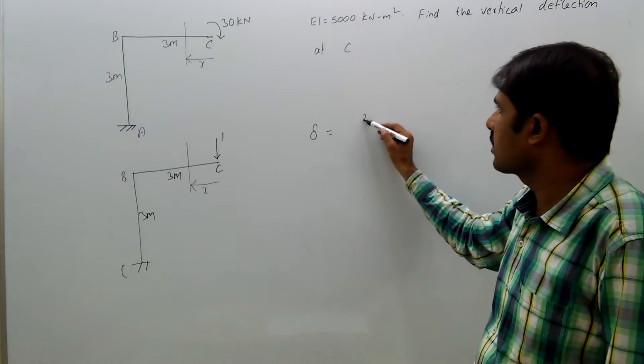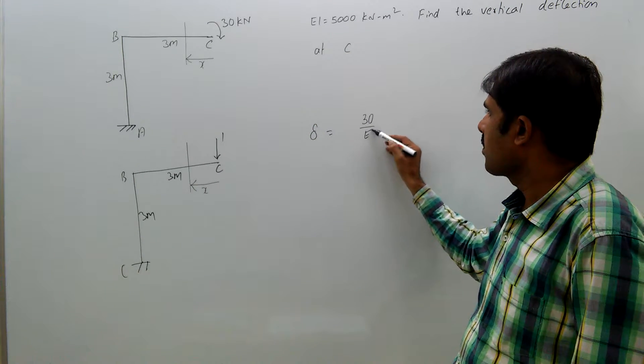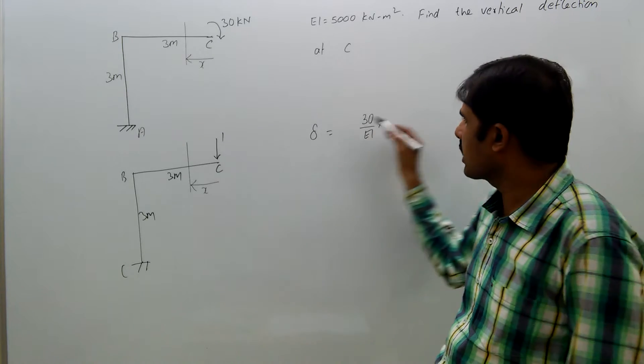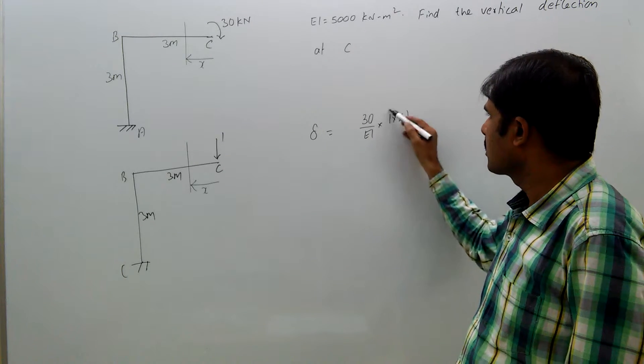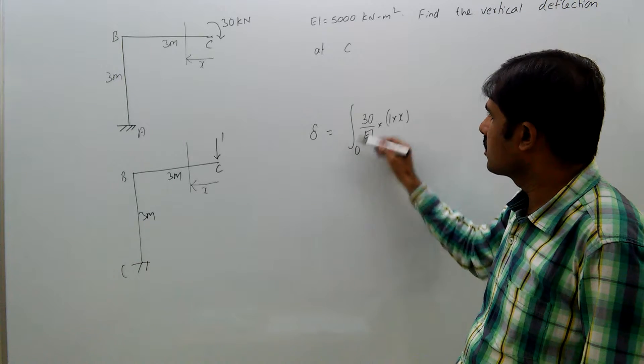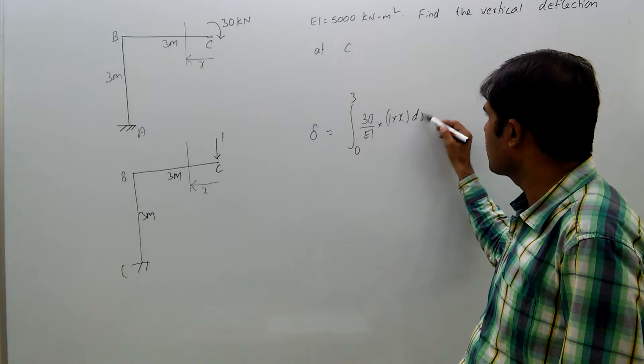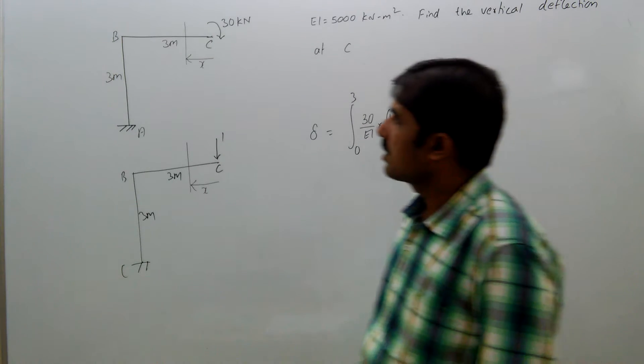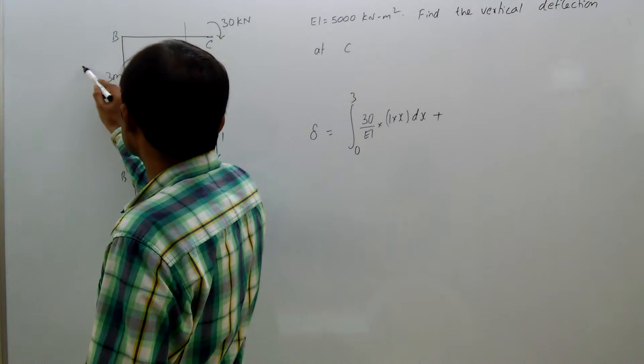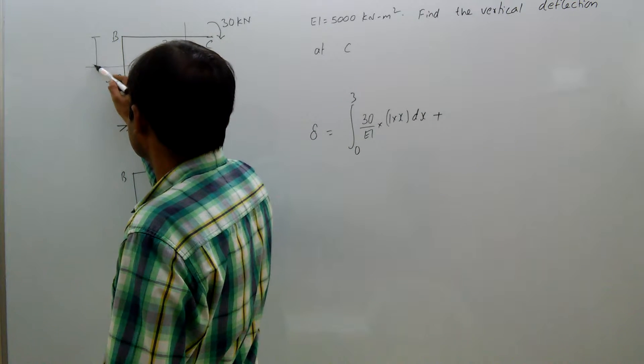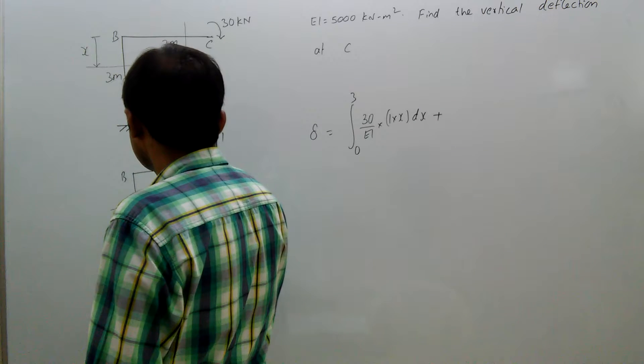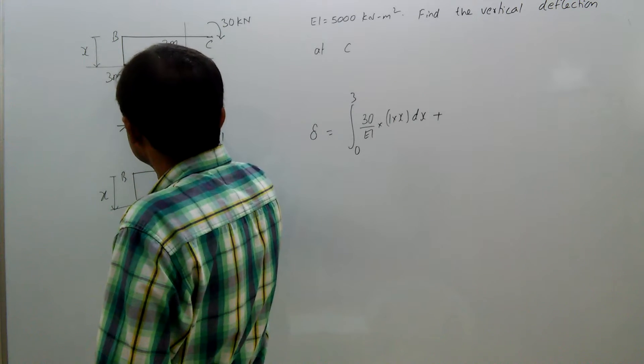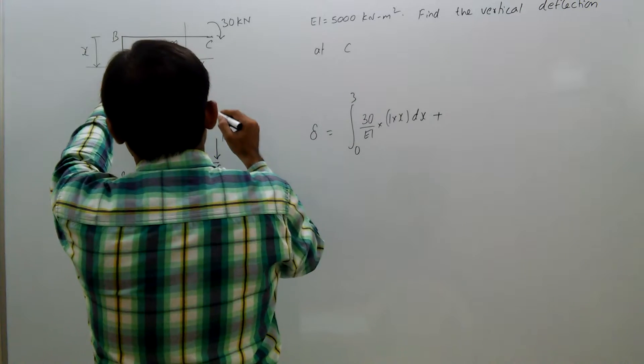Capital M is 30 by EI, small m is 1 in dx, integral 0 to 3 dx. Plus here at a distance x from this B, if you take here like this x and here also x, if you take here bending moment is 30 only.